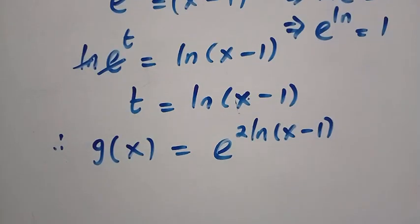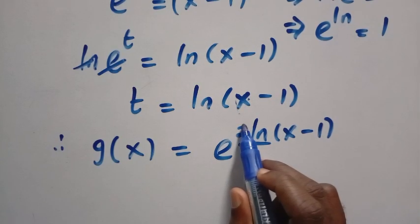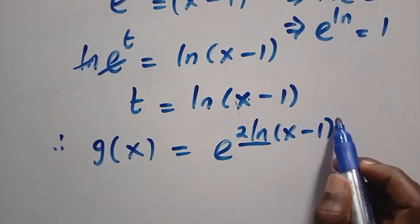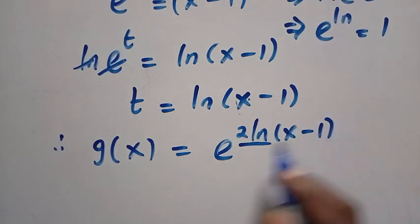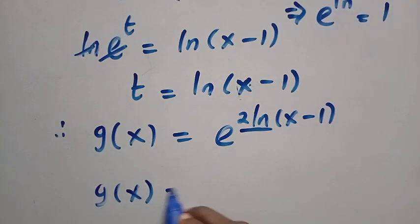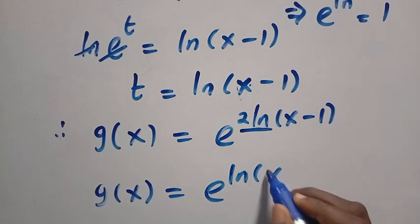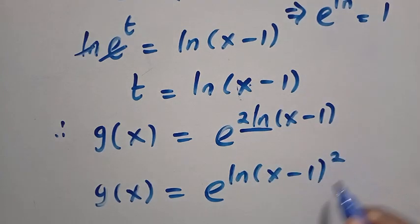And then, we are going to apply the logarithm rule here. We have 2 at the bracket of ln. So, the rule says, we take this 2 to the power of x minus 1. We have g of x equals e^(ln(x minus 1)^2).